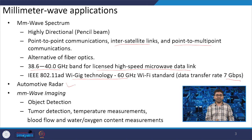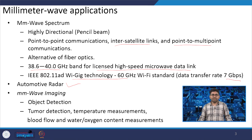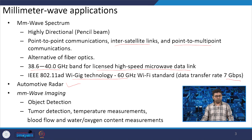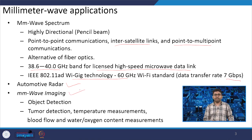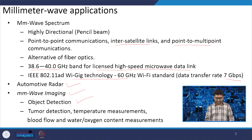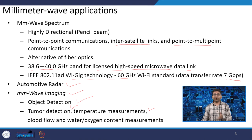For automotive radar, we are going to high frequency because we want very low latency — in fractions of a second we would like to detect collisions. That kind of radar requires very high bandwidth. There is also millimeter wave imaging; we can use millimeter wave frequency for object detection, tumor detection, temperature measurement, blood flow, or water/oxygen measurement. Millimeter wave has multiple applications that can be used.